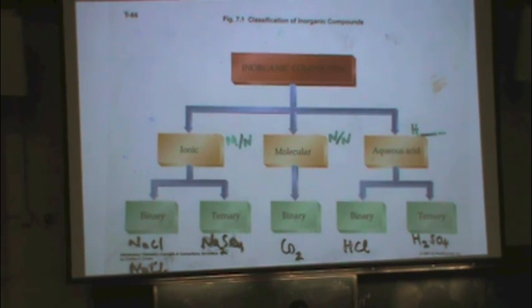Within aqueous acid, there's two subcategories. There's binary. Two different types. And see, hydrogen is listed first. HCl is hydrochloric acid.